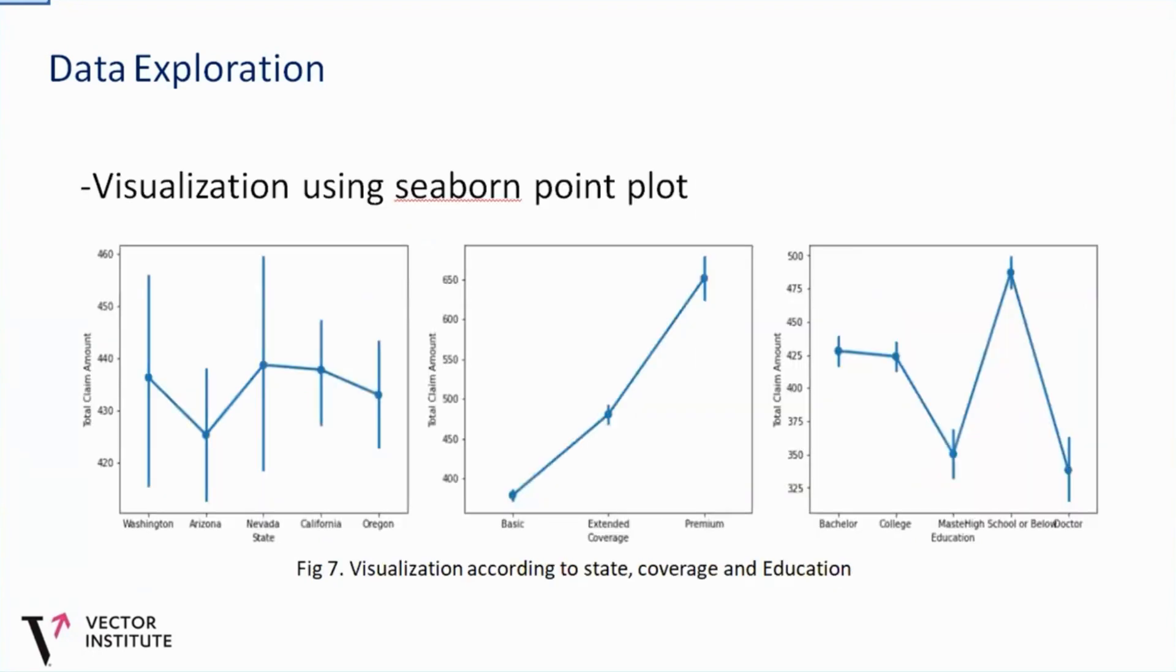We also went further to use the points plots to check all the independent features. We can see for the state here, we can see the Washington and the Nevada have high total claim amount as compared to others living in other regions. For the coverage, we can see that those on the premium package spends more on the total claim amount as compared to others. And for the education, we can see those with high school or below tends to also pay more as compared to others.